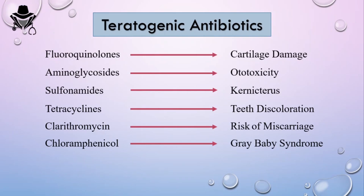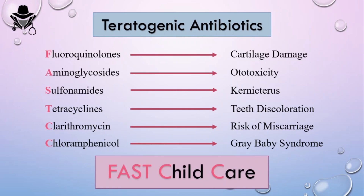To remember all six teratogenic antibiotics, imagine you are in the OB-GYN world and a pregnant woman comes to you with an infection. You want to give her an antibiotic but must avoid teratogenic ones. The mnemonic is 'FAST CHILD CARE': F for fluoroquinolones, A for aminoglycosides, S for sulfonamides, T for tetracycline, C for clarithromycin, C for chloramphenicol. Give fast child care in OB-GYN.